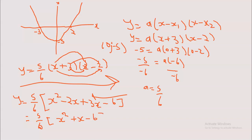From here we need to finish off. The number outside multiplies everything inside one by one. So it will be: 5/6 times x squared gives 5/6 x squared; 5/6 times x gives 5/6 x; and 5/6 times negative 6 gives negative 5. So y equals 5/6 x squared plus 5/6 x minus 5. Remember this is the same as the first format — the value before x squared is your a, the value before x is b, and the last number is c.